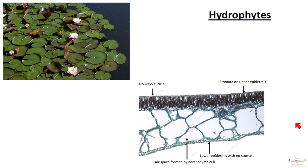This video is about the second type of plant with adaptations, the hydrophytes. These plants live either in or on water, and the example we've got here is the water lily.